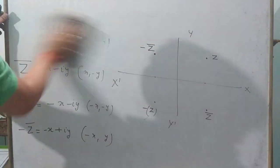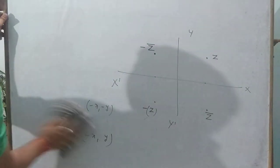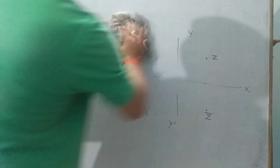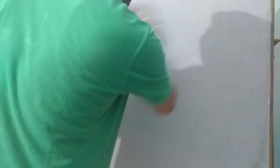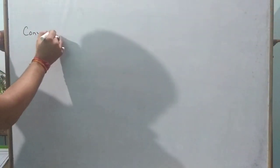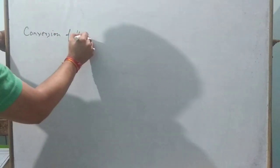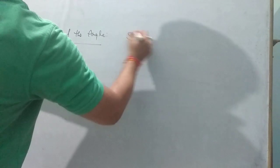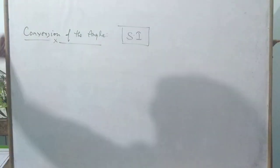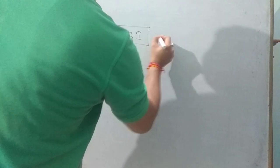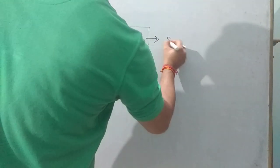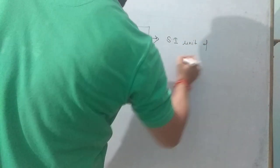Now, before we explain the polar form, also known as the trigonometric form, there is a topic on conversion of angles. As you know, in the SI system of fundamental units, the SI unit of angle is the radian.